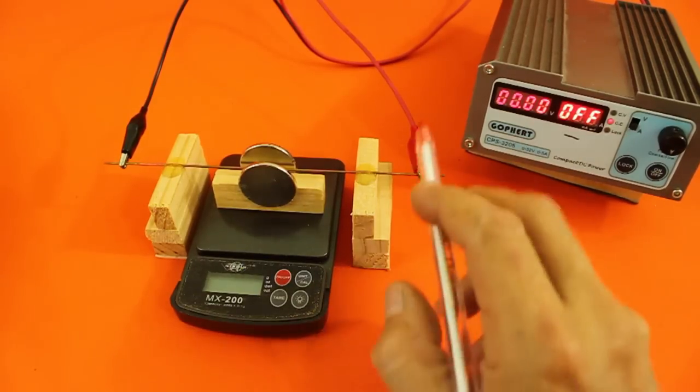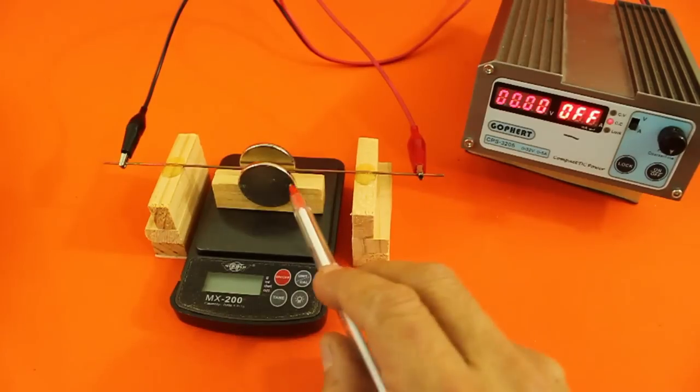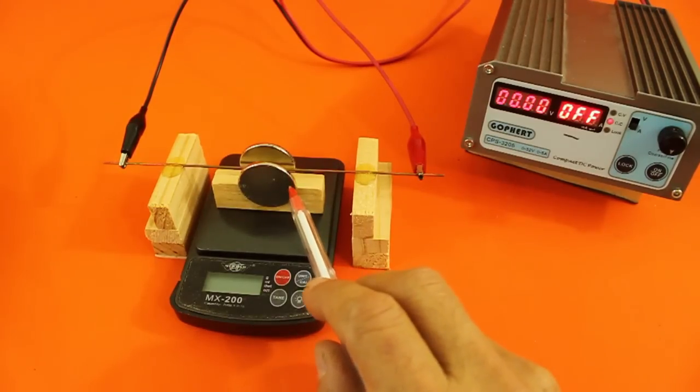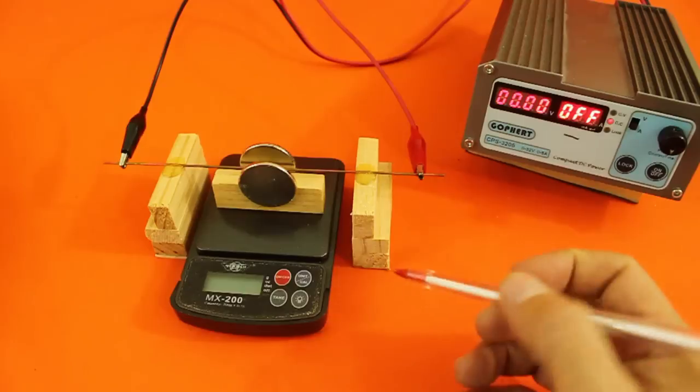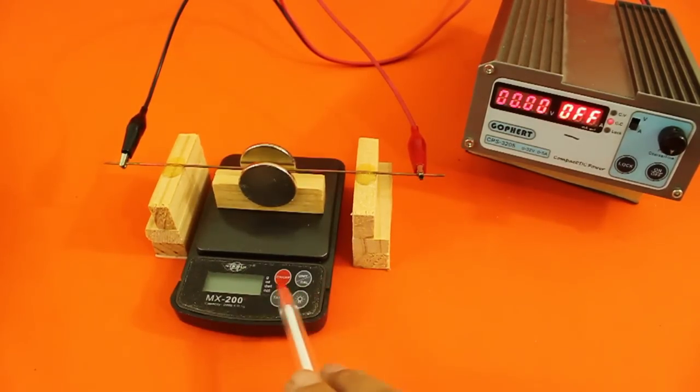Similarly, if the conductor feels a force downwards, the magnet will feel the same force upwards and this will be registered as a loss of weight.